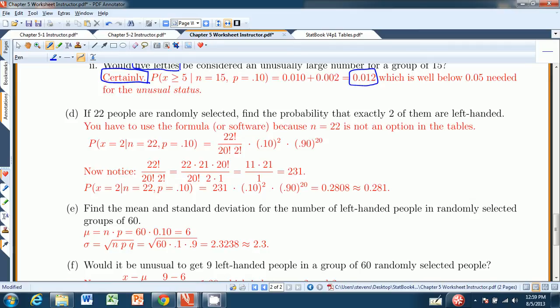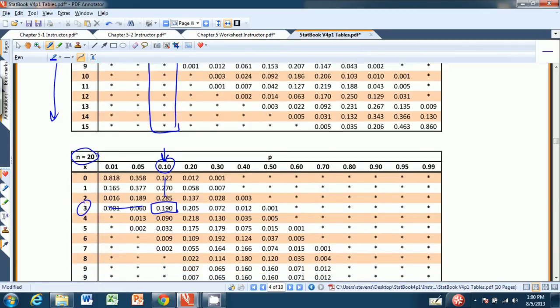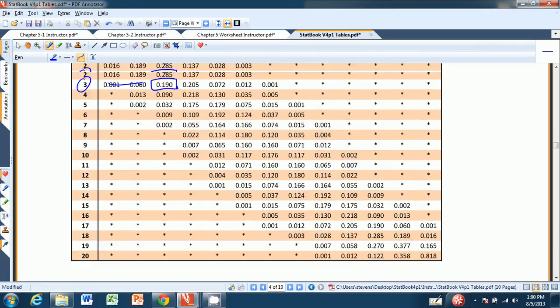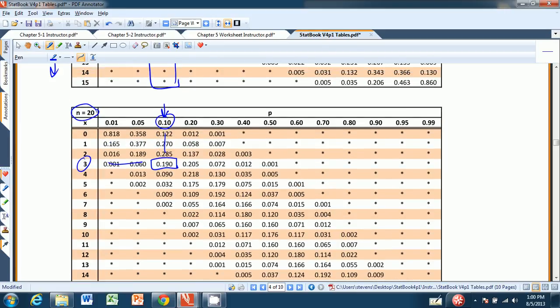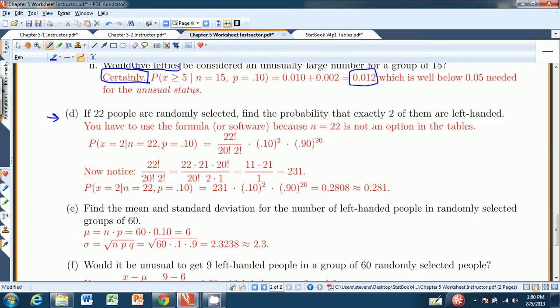When you do that, we're .010 plus .002 for a probability of .012. So the probability of getting five or more is .012. That is smaller than .05. So yes, five lefties would certainly be considered an unusually large number. So what if you have 22 people? So now n is 22, and I specifically used 22 in this example because 22 is not in our table. You can't always use the table. It stops at 20. So n equals 22, we're out of luck. But we can also be out of luck if, say, P was .83. So the table is limited use. So every once in a while, you might have to use the formula. So that's what we have to do here.